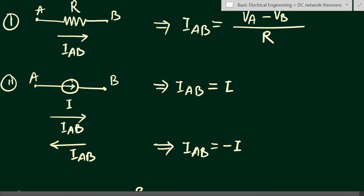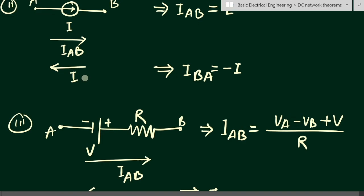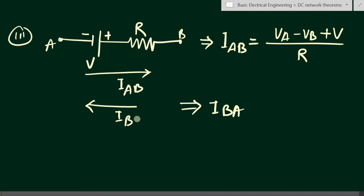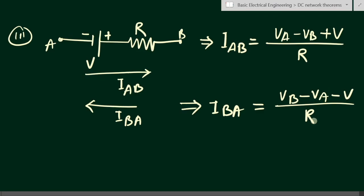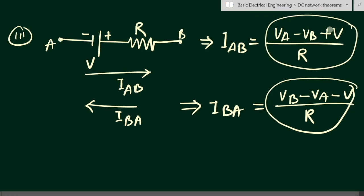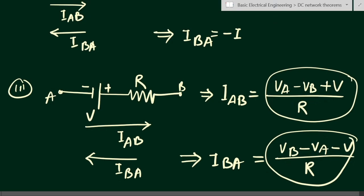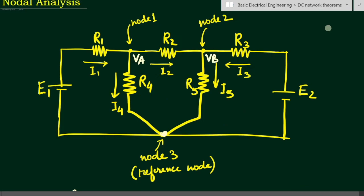If the direction is opposite, that is Iba from B to A, then Iba = (Vb - Va - V) / R, since we have a drop in potential from positive to negative across the voltage source. Comparing both expressions, this is simply the negative of the previous formula, as the direction is reversed.